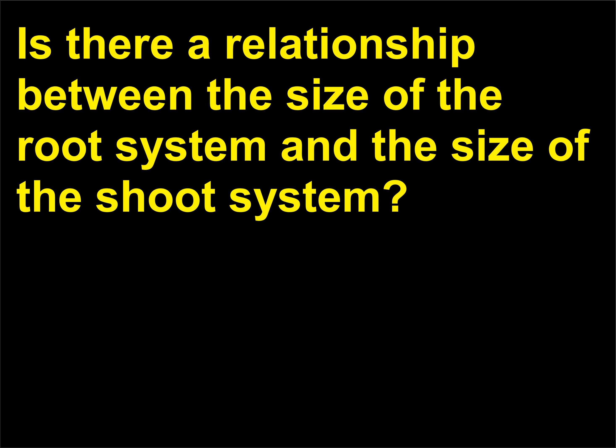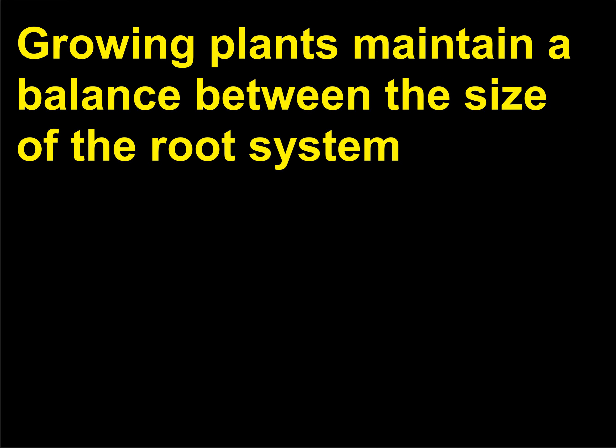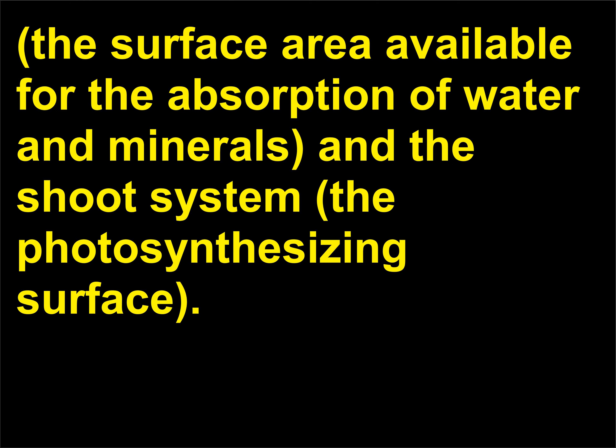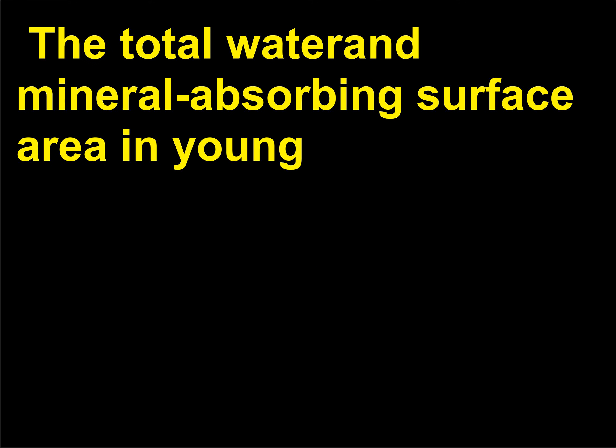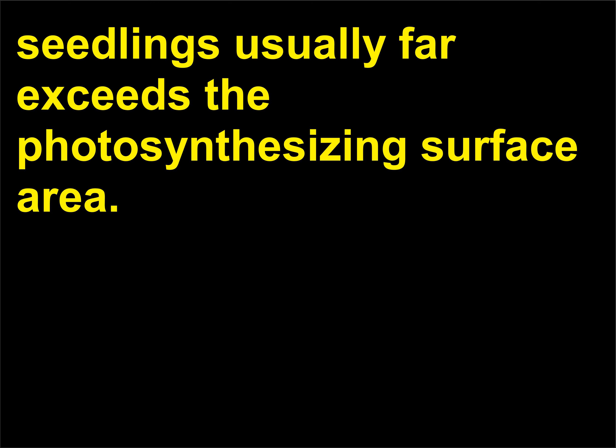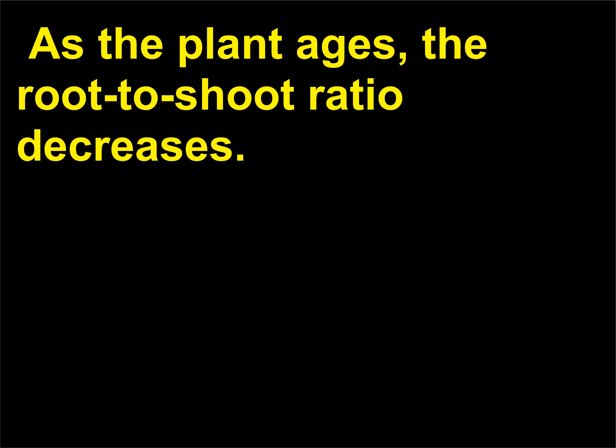Is there a relationship between the size of the root system and the size of the shoot system? Growing plants maintain a balance between the size of the root system — the surface area available for the absorption of water and minerals — and the shoot system, the photosynthesizing surface. The total water and mineral absorbing surface area in young seedlings usually far exceeds the photosynthesizing surface area. As the plant ages, the root to shoot ratio decreases.